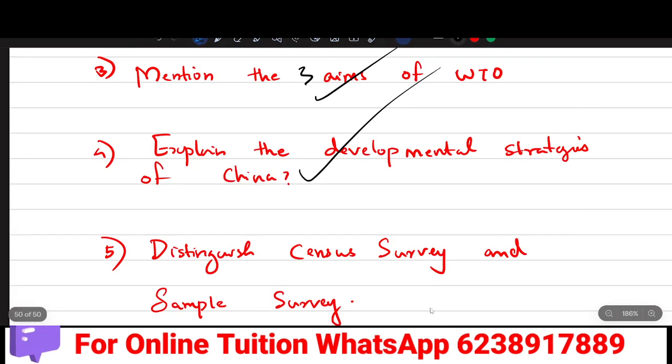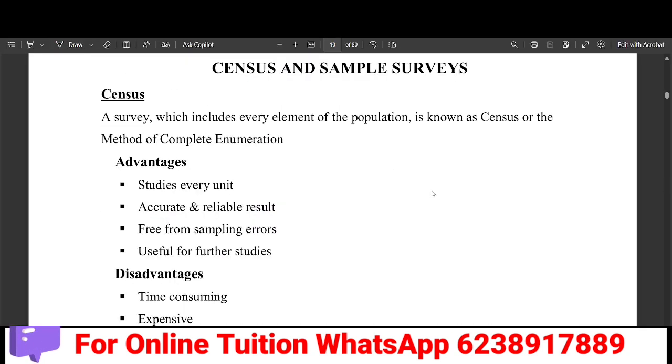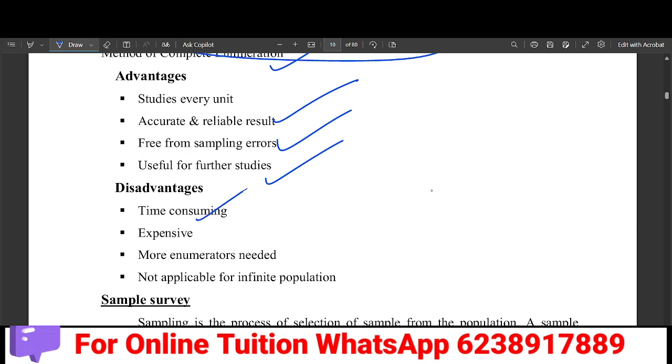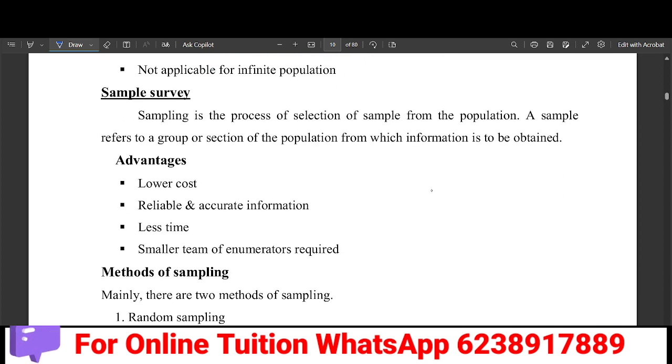Last question: Distinguish census survey and sample survey. Census survey studies the entire population. Complete enumeration is very accurate, free from sampling errors, and useful for further studies. But it is time consuming and expensive. Sample survey selects samples from the population, so cost is lower, but there is a chance of mistakes.